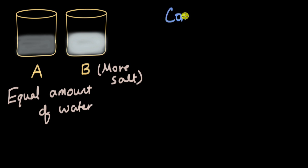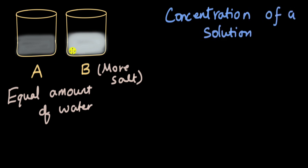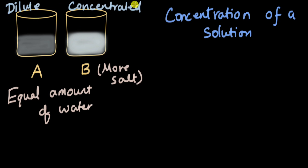We can talk about the concentration of a solution. In this example, we can say that beaker B is more concentrated than beaker A, and beaker A is less concentrated than beaker B. Or we can use the words dilute and concentrated — this is a dilute solution and this is a concentrated solution. The words dilute or concentrated can only be used when you are comparing with something else. Whichever one is less concentrated is called dilute compared to the other beaker.